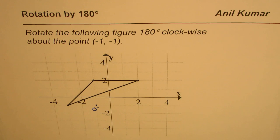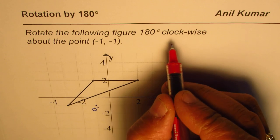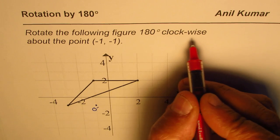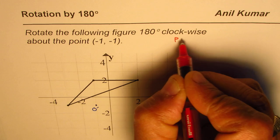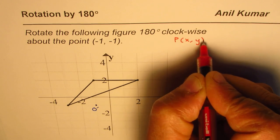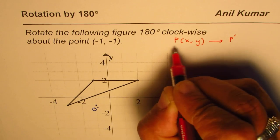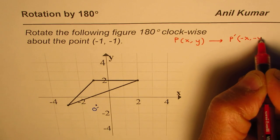It is important to note that when we are doing 180-degree rotations, whether clockwise or counterclockwise, we get the same result. Normally, if you have a point P at (x, y), then after rotation of 180 degrees, point P', the image, will be at (-x, -y).